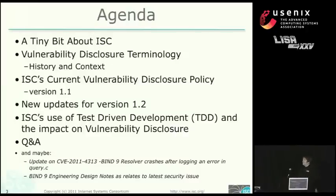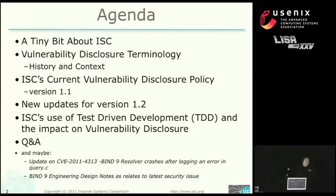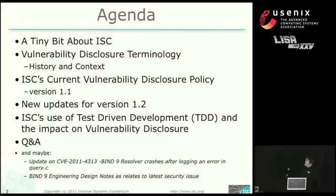We're going to talk a tiny bit about who ISC is, vulnerability disclosure terminology, a little bit of history and context, what we do now, a tiny bit about what we used to do, and where we're going — what we're implementing. And then a little bit about an interesting conundrum we've come up with because of the way we disclose stuff and the fact that we use test-driven development, and how our community would like us to handle that. I want your input. And then if you're interested, we can talk about the last big DNS Bind vulnerability.